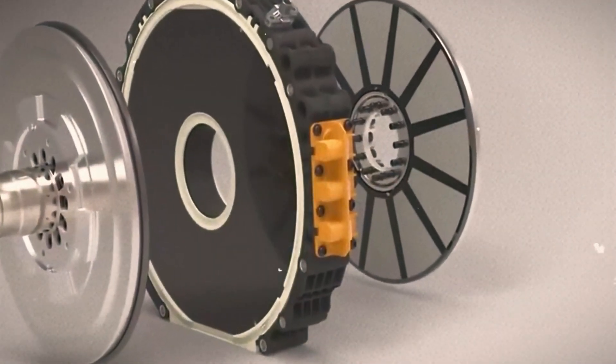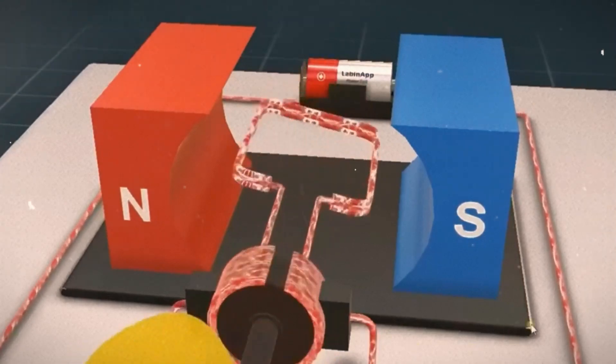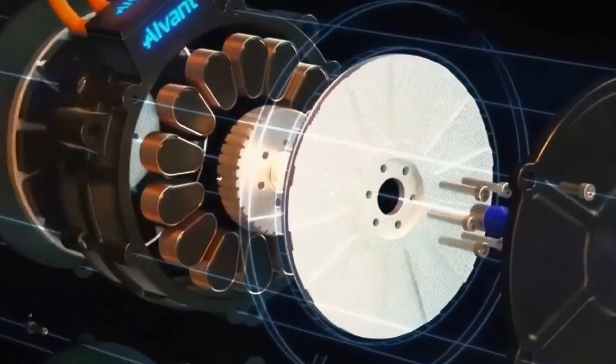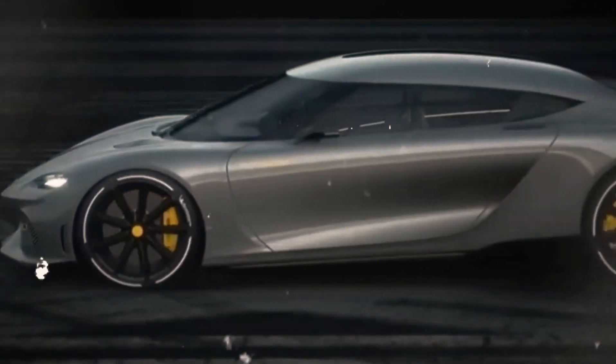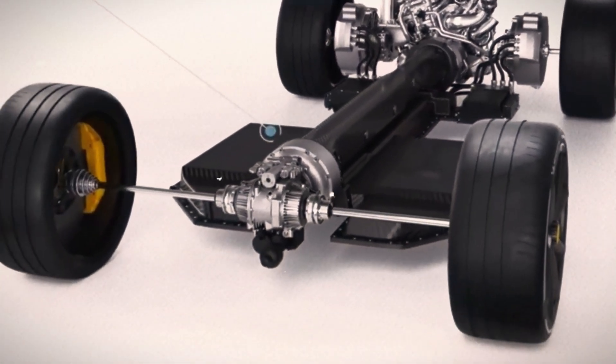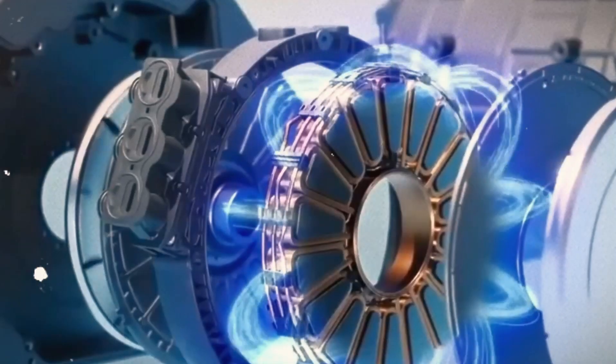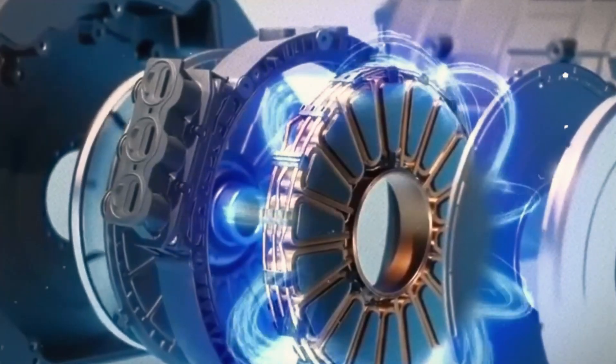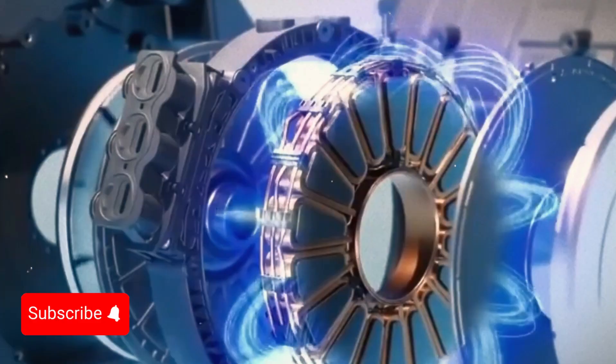Mechanical field weakening in axial flux motors involves challenges like maintaining the air gap between the discs while they exert strong magnetic forces. GM proposes a hydraulic system to adjust the gap, potentially leading to more efficient, smaller, and lighter motors. Is this the future of EVs?